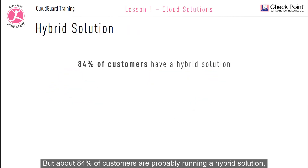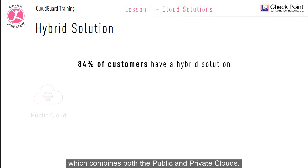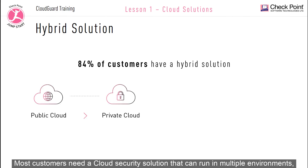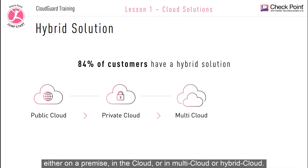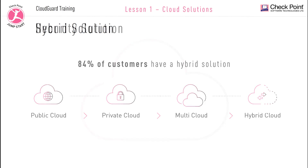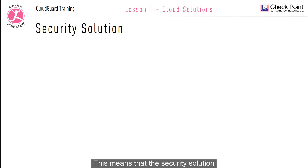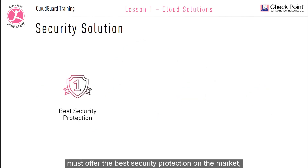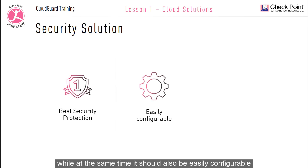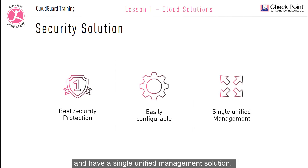About 84% of customers are probably running a hybrid solution, which combines both the public and private clouds. Most customers need a cloud security solution that can run in multiple environments — either on-premise, in the cloud, in a multi-cloud, or in a hybrid cloud. That means the security solution must offer the best security protection on the market, while also being easily configurable with a single unified management solution.